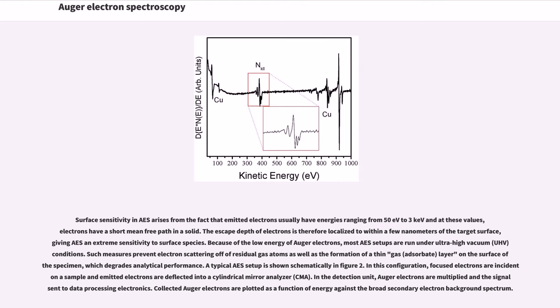Surface sensitivity in AES arises from the fact that emitted electrons usually have energies ranging from 50 eV to 3 keV, and at these values, electrons have a short mean free path in a solid. The escape depth of electrons is therefore localized to within a few nanometers of the target surface, giving AES an extreme sensitivity to surface species. Because of the low energy of Auger electrons, most AES setups are run under ultra-high vacuum (UHV) conditions.